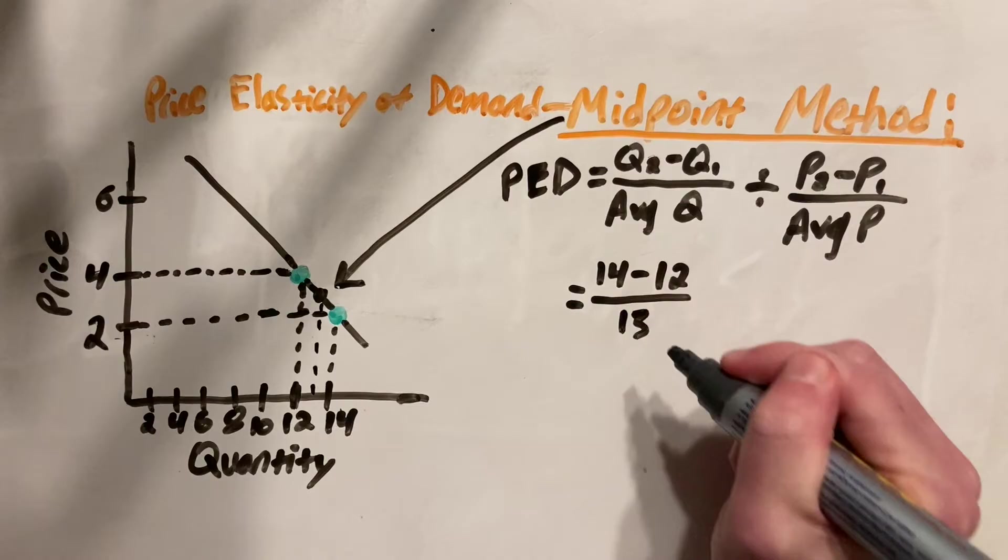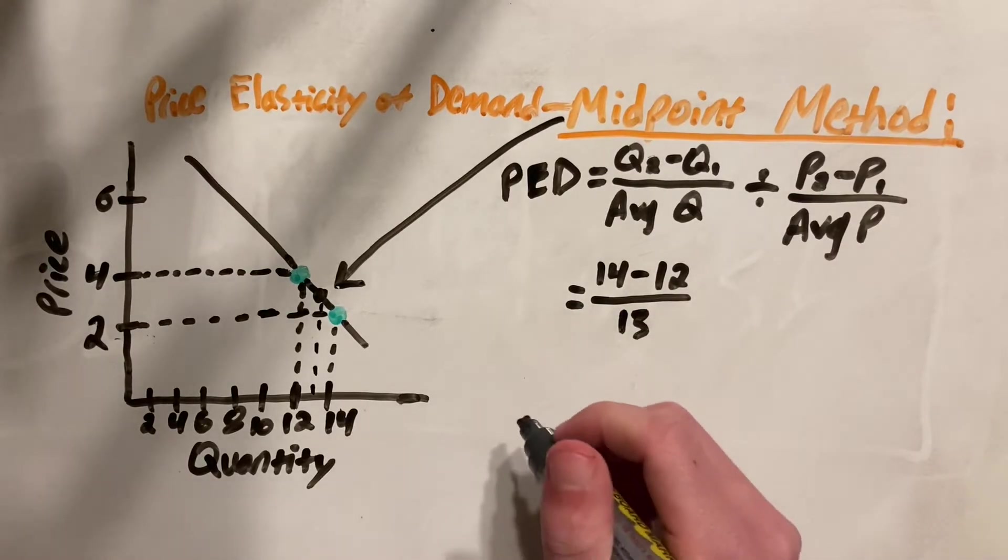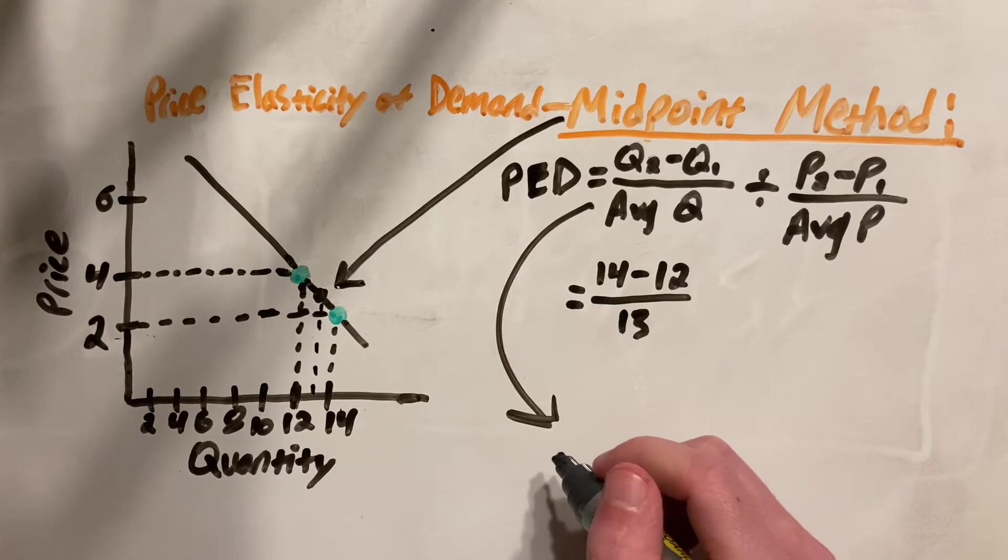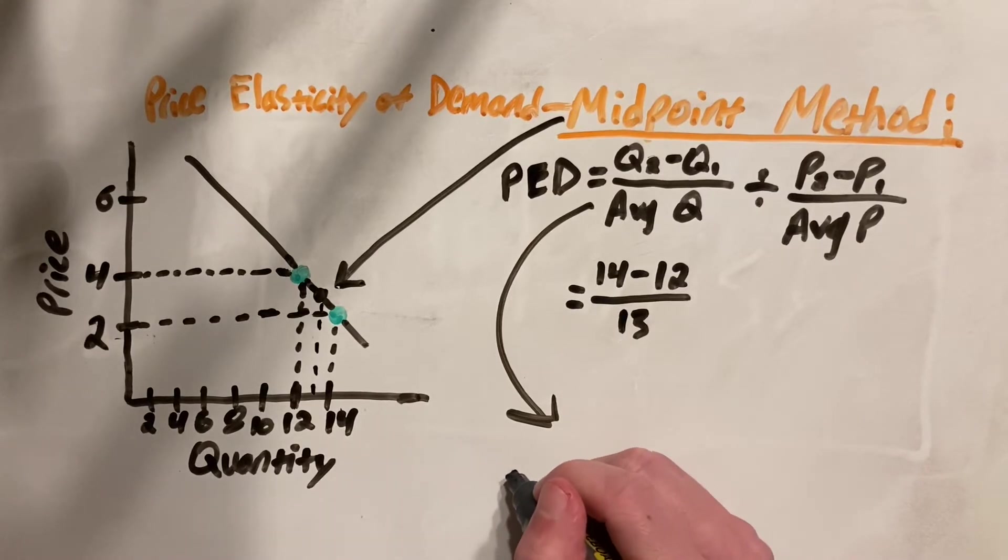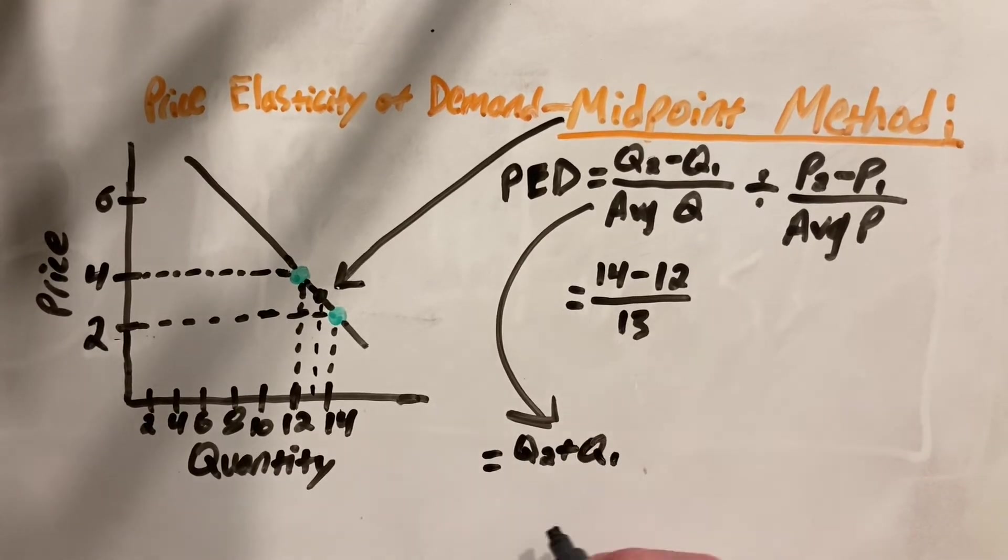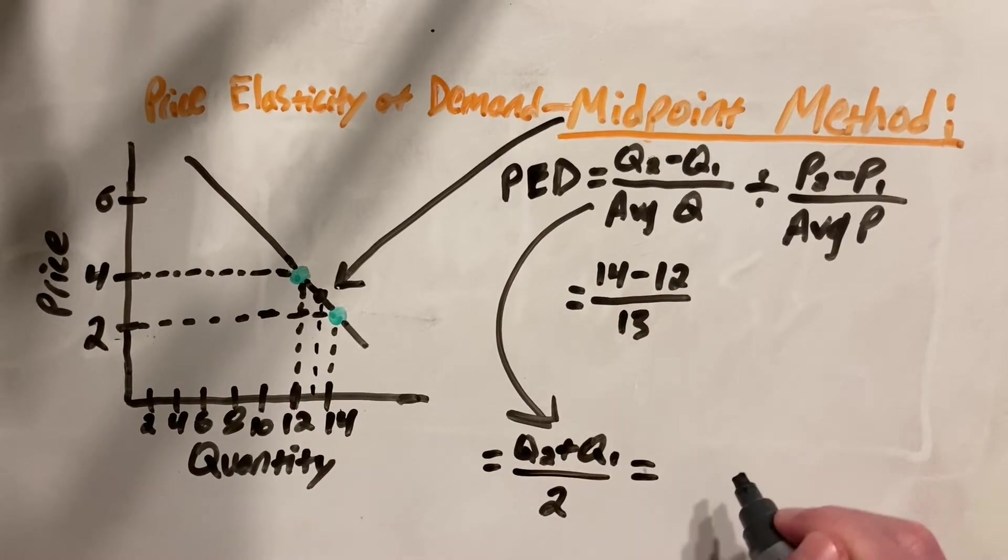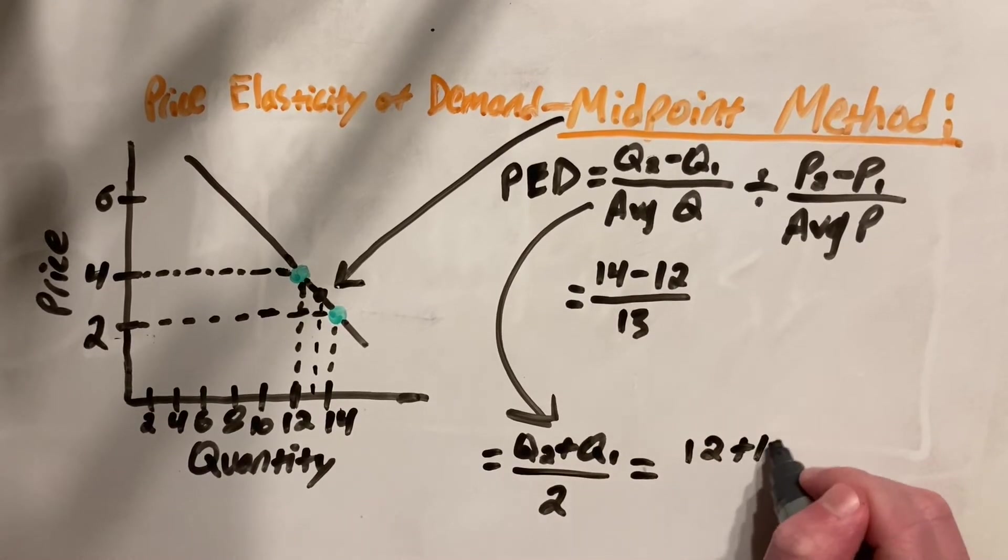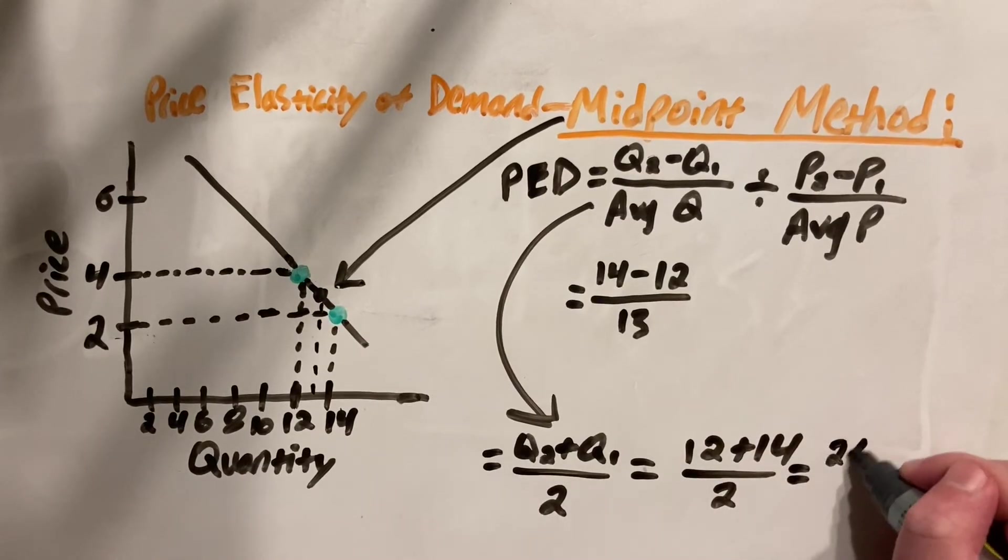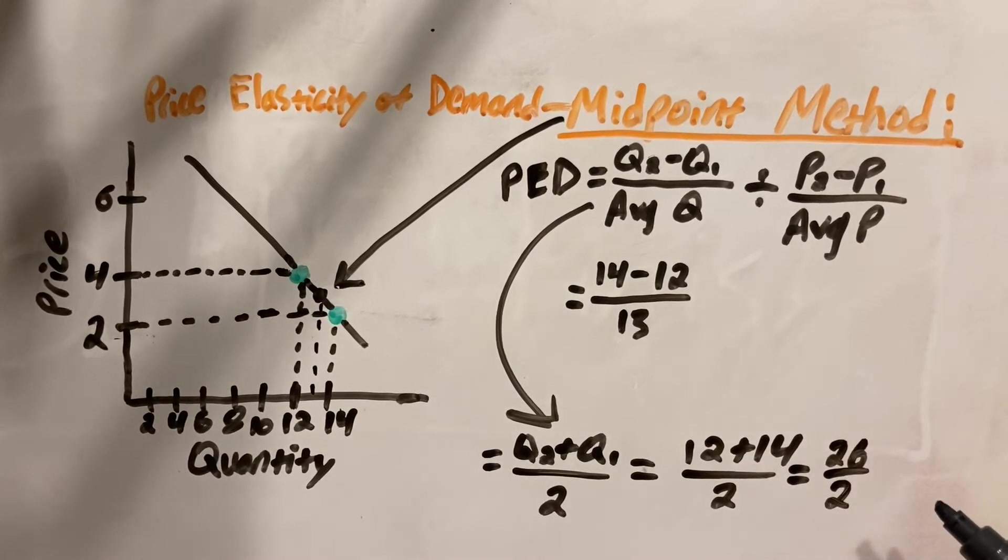However, in some cases, it won't be as easy as just looking at it and you might have to calculate the average. And if that's the case, just remember to get the average, add Q2 and Q1 together and divide it by 2. In this example, that's like adding 12 and 14, dividing it by 2, that will give us 26 divided by 2, which will give us our average of 13.